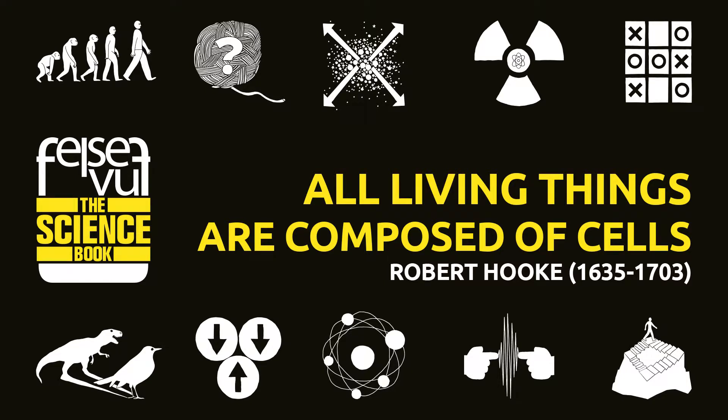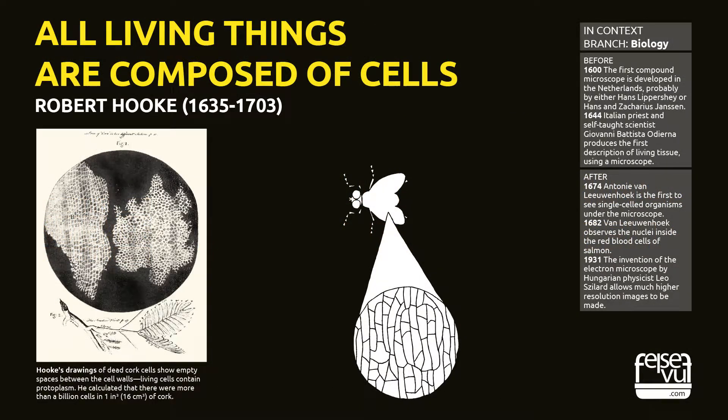All living things are composed of cells. Robert Hooke, 1635 to 1703. The development of the compound microscope in the 17th century opened up a whole new world of previously unseen structures. A simple microscope consists of just one lens, while the compound microscope, developed by Dutch eyeglasses makers, uses two or more lenses and generally provides greater magnification.